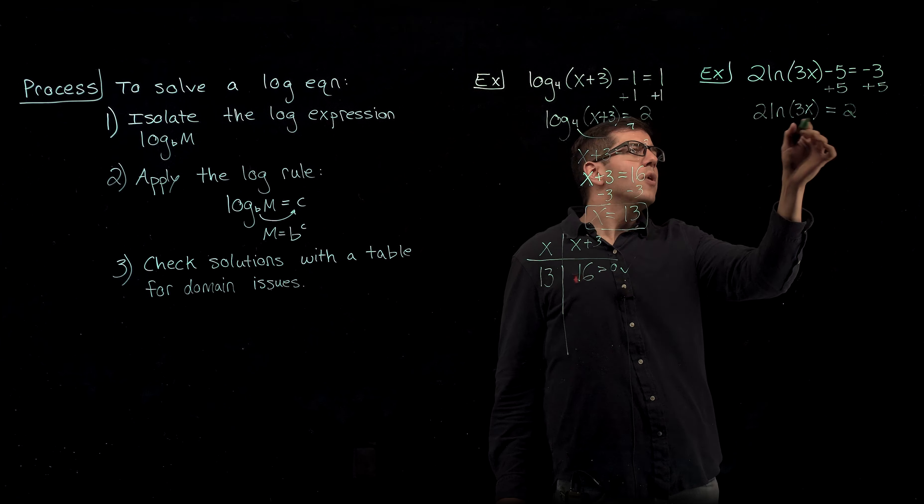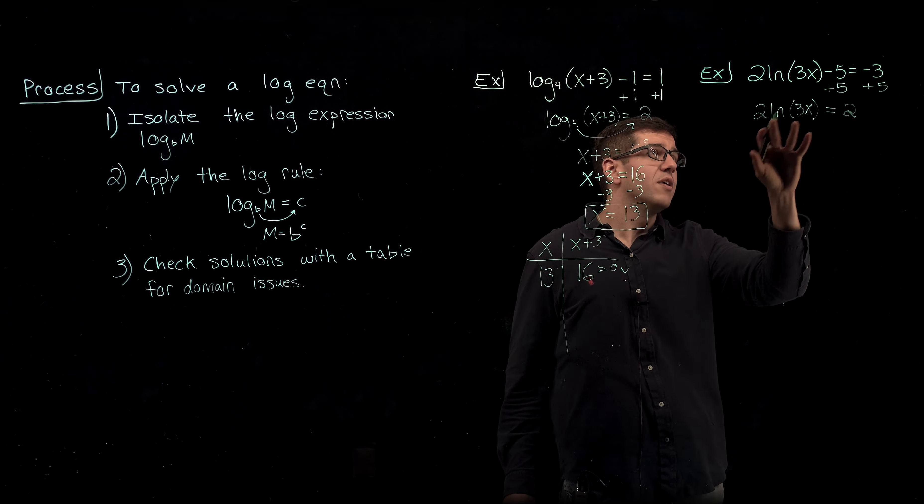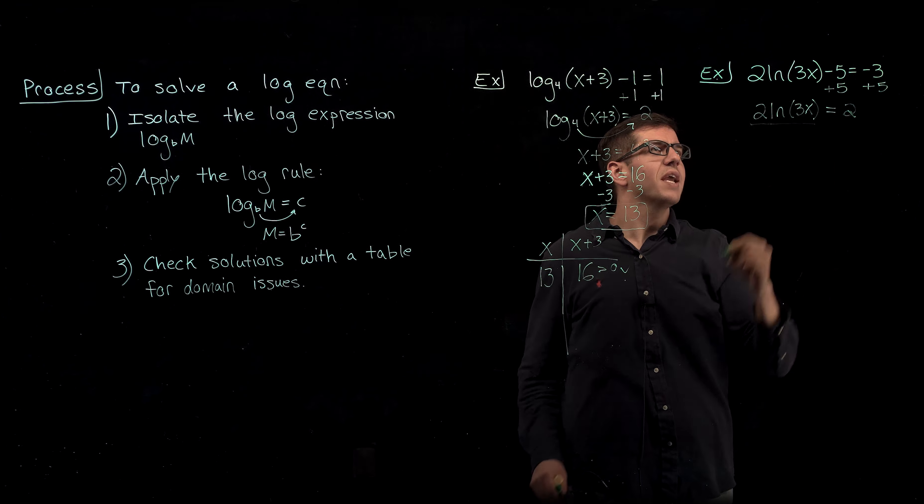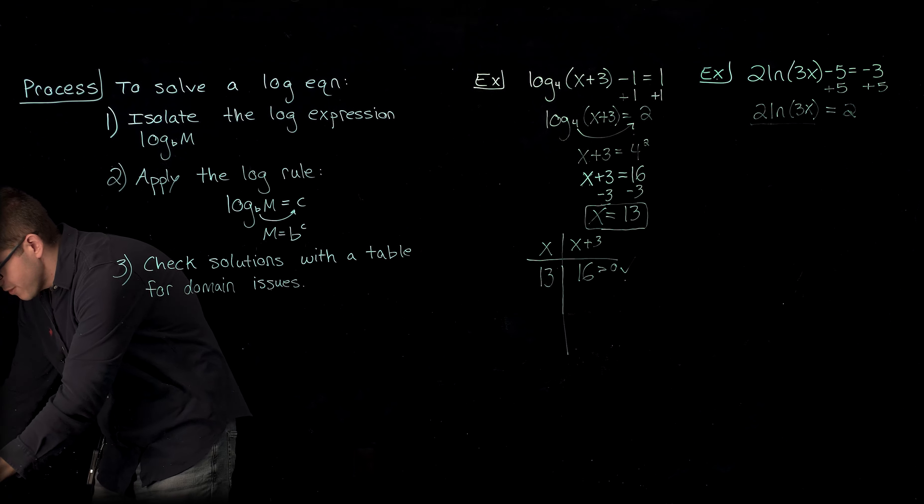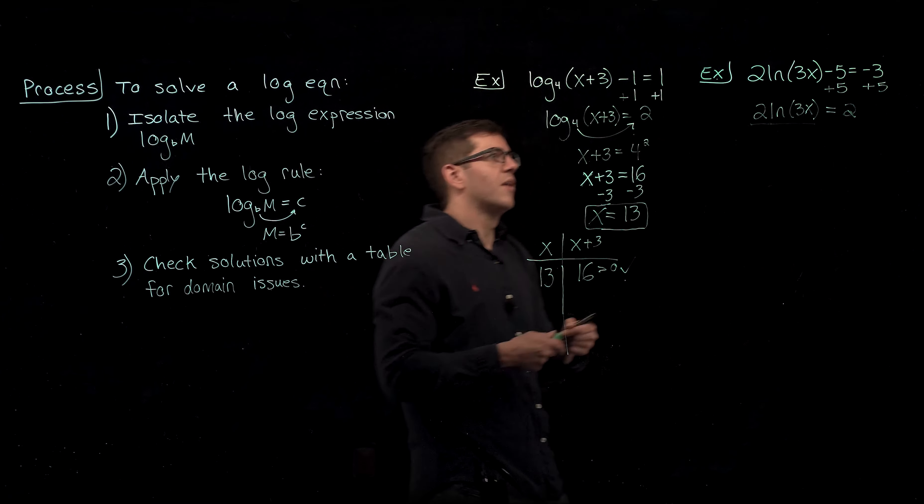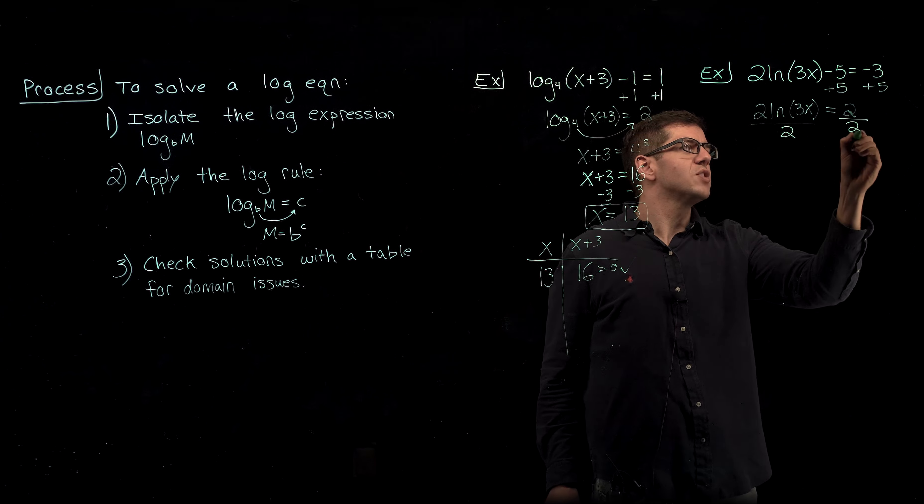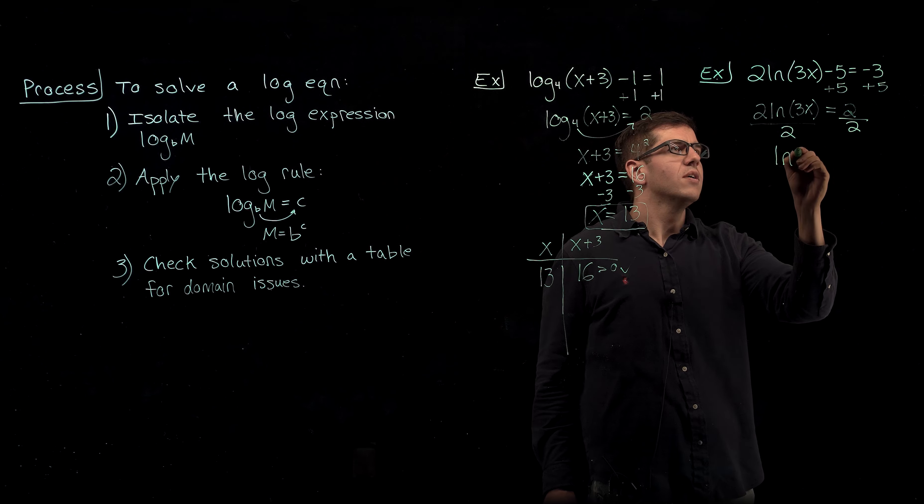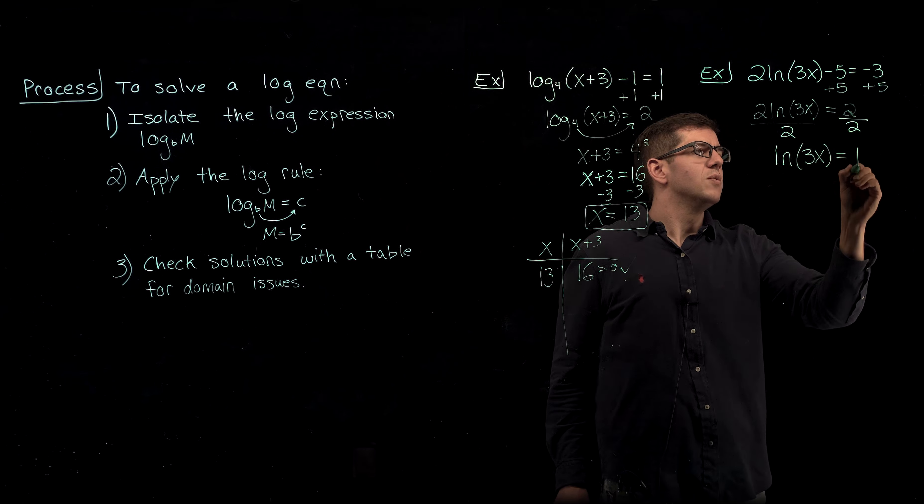And now to get the natural log of 3x alone, we are going to divide by this value that is in front of the natural log. So we'll divide by this 2 on each side, which gives us the natural log of 3x is equal to 1.